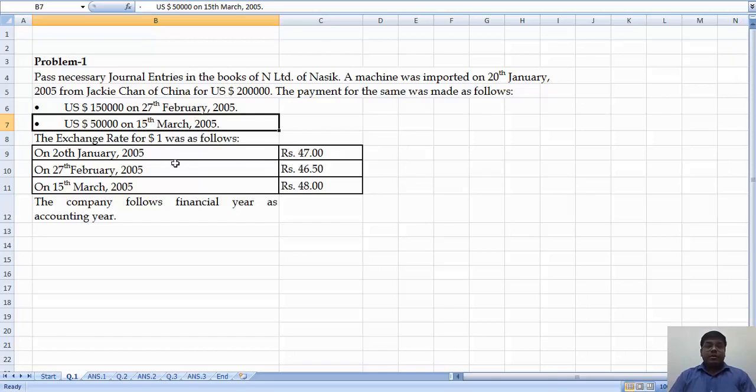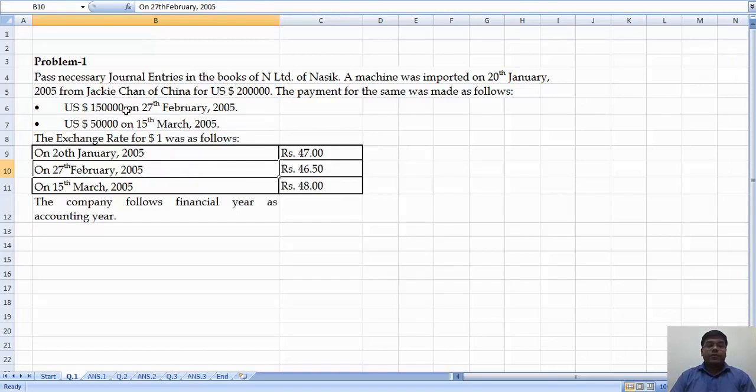But when we made the payment on 27th February for 1 lakh 50,000, the rate was Rs 46.50, and on 15th March 2005, the rate was Rs 48. So on 27th, the rate decreased, and on 15th March, the rate increased.